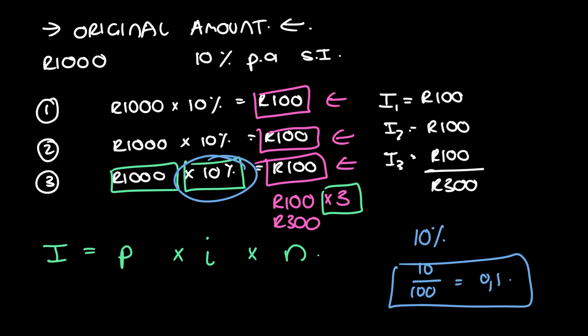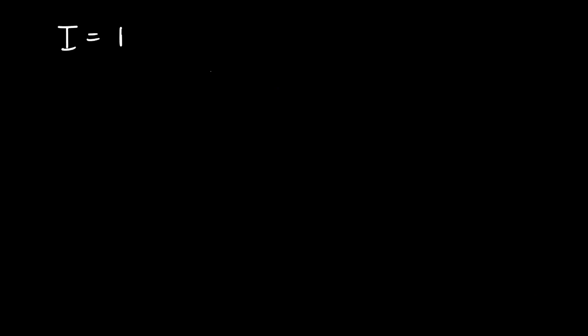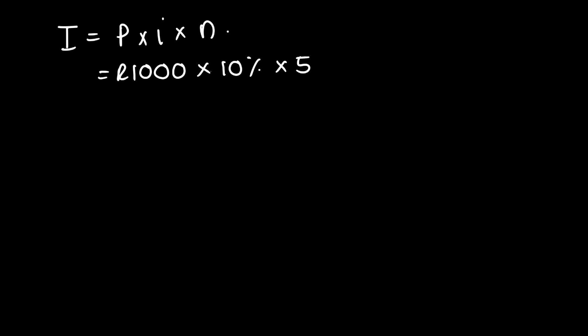Now what if we didn't just want the interest — what if we wanted the total amount given back? Say we invested a thousand rand: how much are we going to get back in our account after five years? Our first approach is to work out the total interest first. The total interest is P times i times n, so in our case it's a thousand times ten percent times five — because we want to find out what will be in our account at the end of five years — giving us 500 rand.